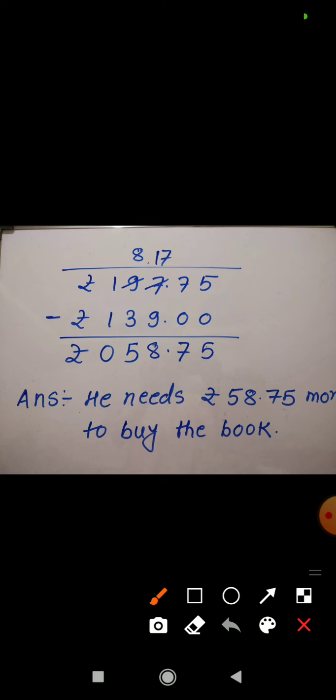So here the difference comes 58.75. Children, 0 in the beginning has no value, okay? So we can write this amount as 58 rupees 75 paise. So how much more money he needs to buy the book? He needs 58 rupees 75 paise more to buy the book.